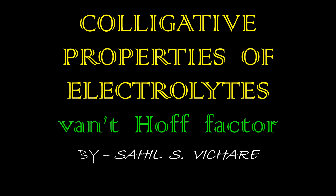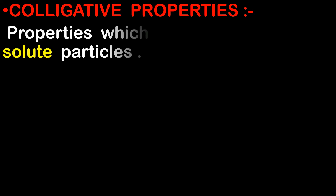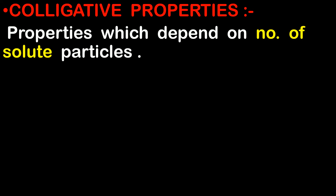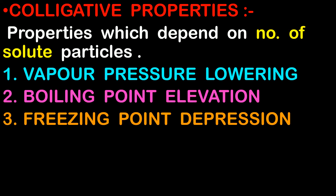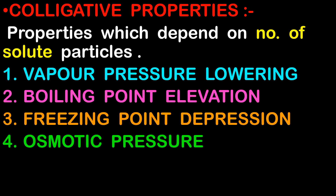In the previous videos we have already seen the colligative properties for non-electrolytes. Colligative properties are the properties which depend on the number of solute particles. It only depends on the amount of solute and it does not depend on its nature. We have already seen the colligative properties for non-electrolytes such as vapor pressure lowering, boiling point elevation, freezing point depression and osmotic pressure.